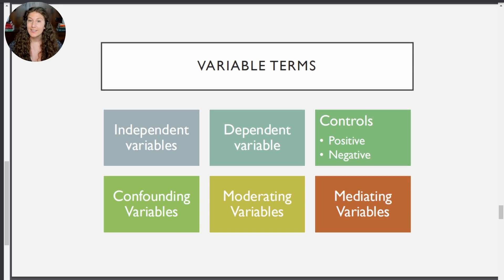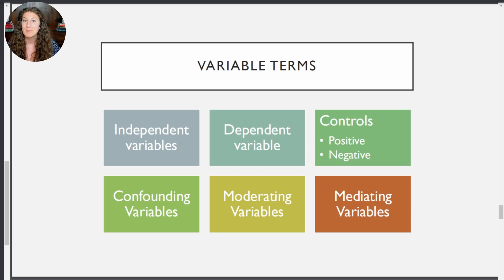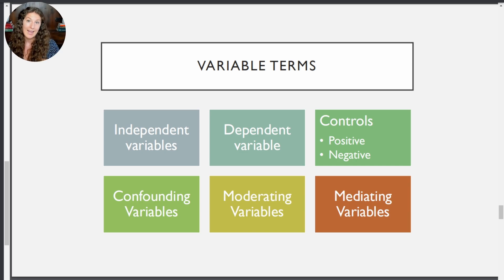Our first variable is the independent variable, and this is what the researchers manipulate in order to see what happens. For example, if we wanted to study the effect of having music playing on test takers, we would independently manipulate whether the music was present or absent in the testing environment. That makes the presence or absence of music the independent variable because it's something that we the researchers are controlling for and changing. Other common independent variables are things like age, where we'll group people by age and then see how they behave in a certain way.